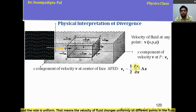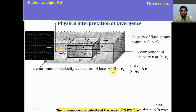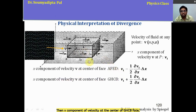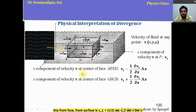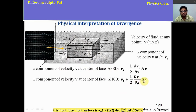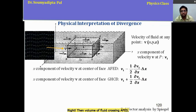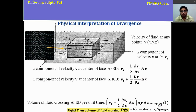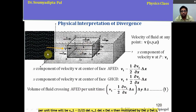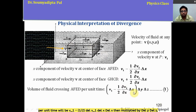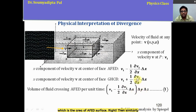That means the velocity of the fluid changes uniformly at different points. The x-component of velocity at the center of the front surface GHCB is V₁ + (1/2)(∂V₁/∂x)Δx — the plus sign because this plane is ahead of point P along the positive x-axis. The volume of fluid crossing AFED per unit time is [V₁ − (1/2)(∂V₁/∂x)Δx] × ΔyΔz, which is the area of the AFED surface.